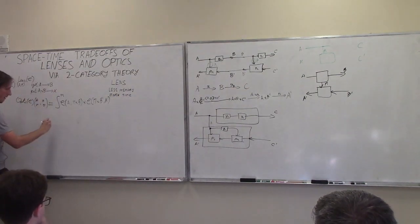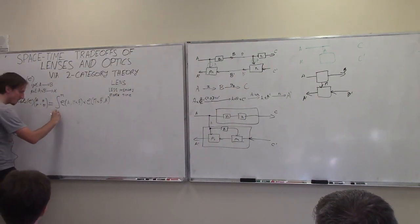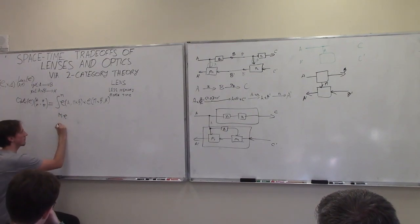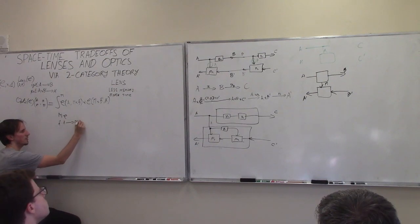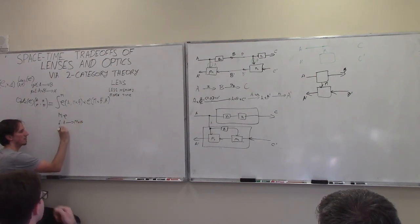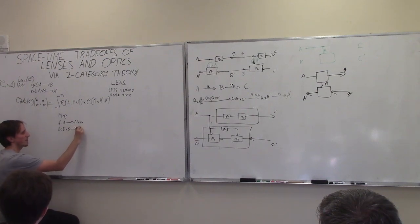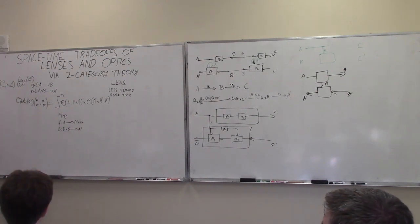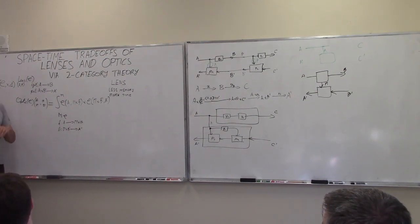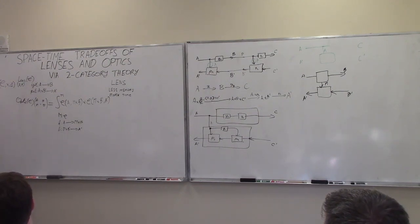An optic consists of three things: an object M in C, a forward map which goes from A to M times B, and a backward map which goes from M times B-prime to A-prime. This is an equivalence class — a quotient — which I'm going to skip unpacking for now. This is our forward map. The idea is that optics give us a freedom: we can now choose the internal state M to our liking.